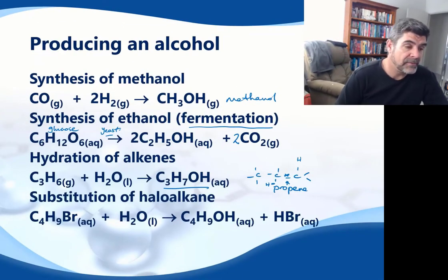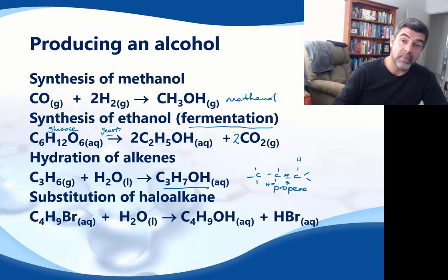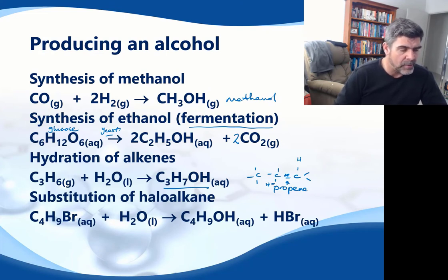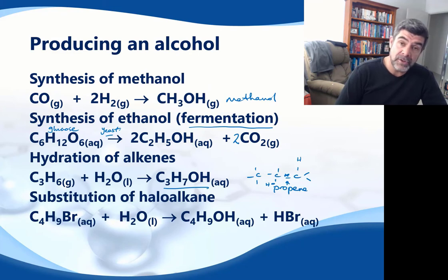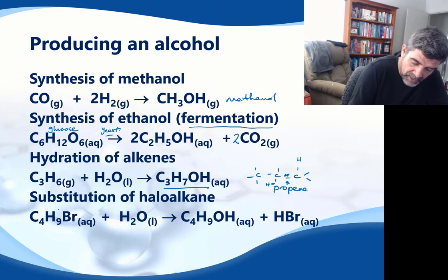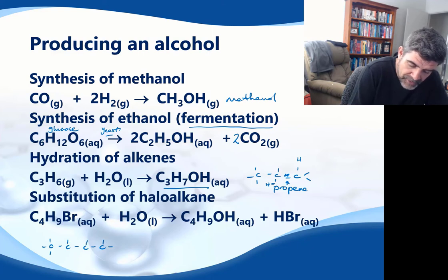This is another type of addition reaction starting with one of our alkenes in order to produce often a secondary alcohol, but not always. The final method we want to look at in a bit more detail is a substitution reaction. We can use substitution reactions of haloalkanes to produce alcohols. Here I have a four-carbon organic compound with hydrogens in each of the spaces and a bromine.